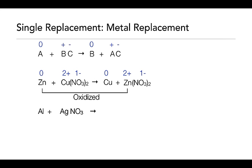Here's where we get our oxidation-reduction. The zinc was oxidized — it lost two electrons, going from a zero oxidation state as a reactant to a 2+ oxidation state as a product. That's oxidation: loss of electrons. The reduction part is the copper. Copper started as a reactant with a 2+ charge and ended with a zero oxidation state — it gained two electrons. In this redox reaction, electrons were transferred from the zinc to the copper.